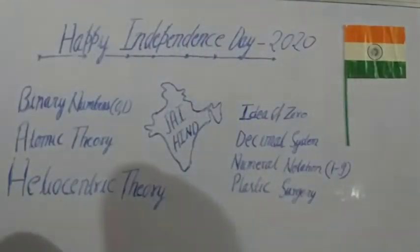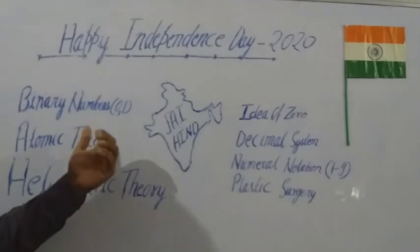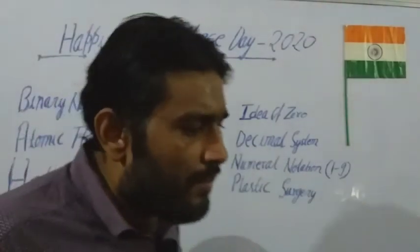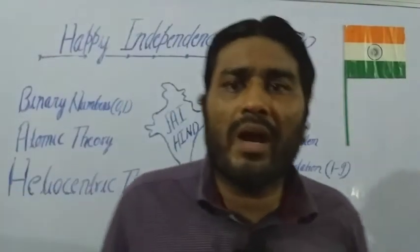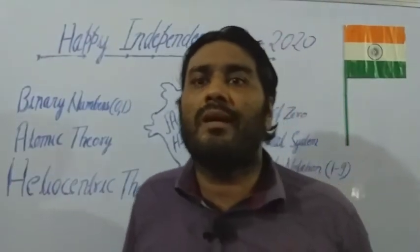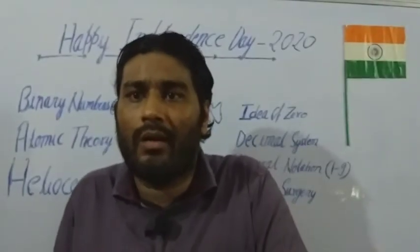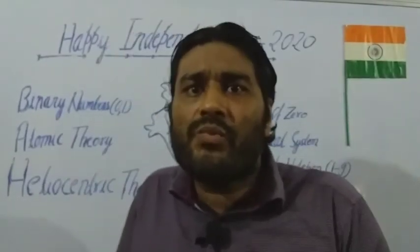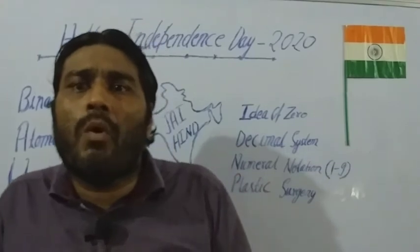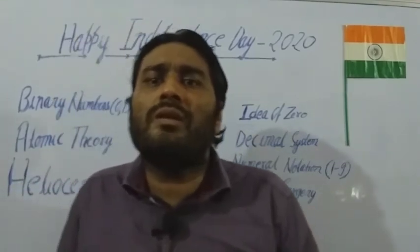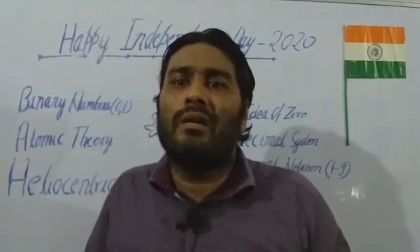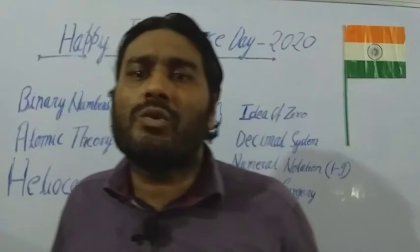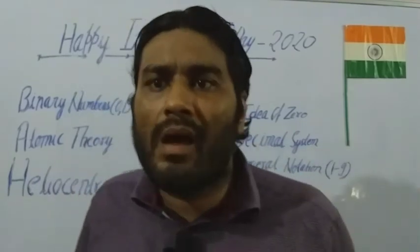Now let's come to binary numbers. These are 0 and 1. These numbers were first described in a book called Chandaḥśāstra, which was written by the great Vedic scholar Pingala.